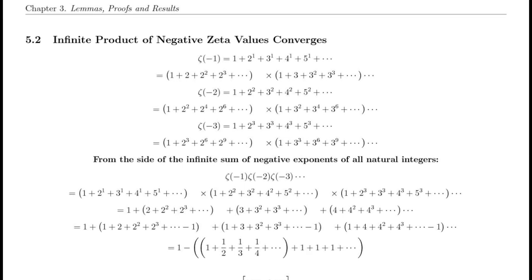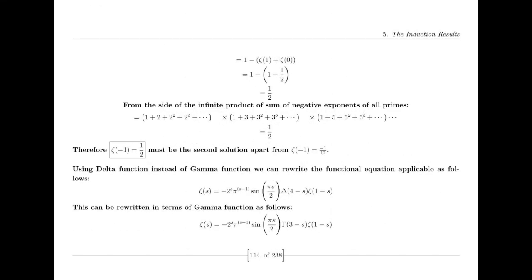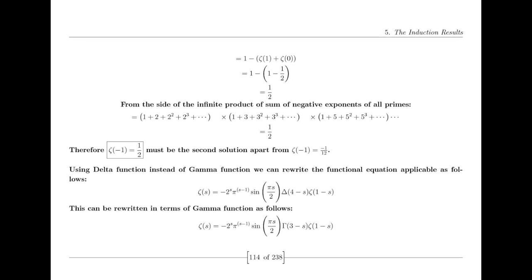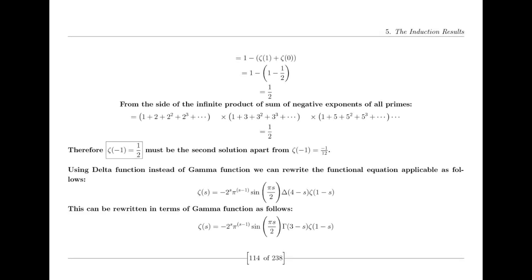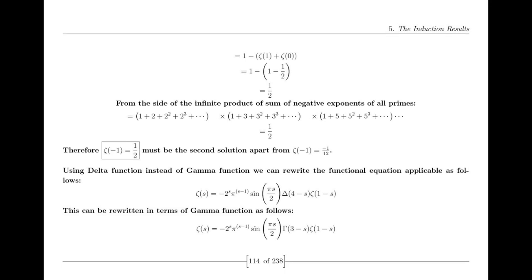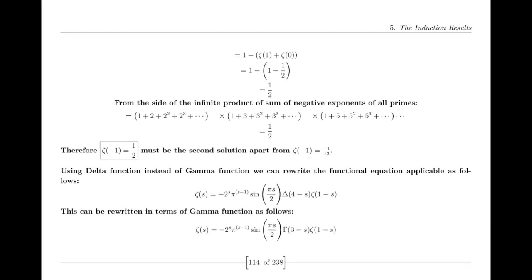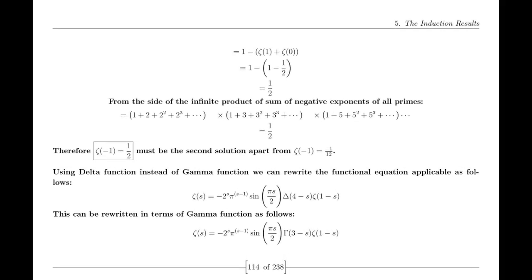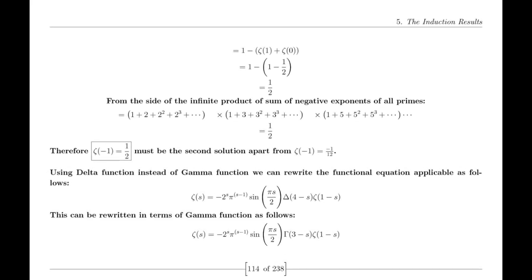In my proof, the trivial zeros of the Riemann zeta function are redefined through the harmonic conjugate, offering a new perspective on their behavior. The harmonic conjugate integrates into the function's framework, modifying the traditional view of these zeros and enhancing our understanding of their distribution in relation to the unified function.